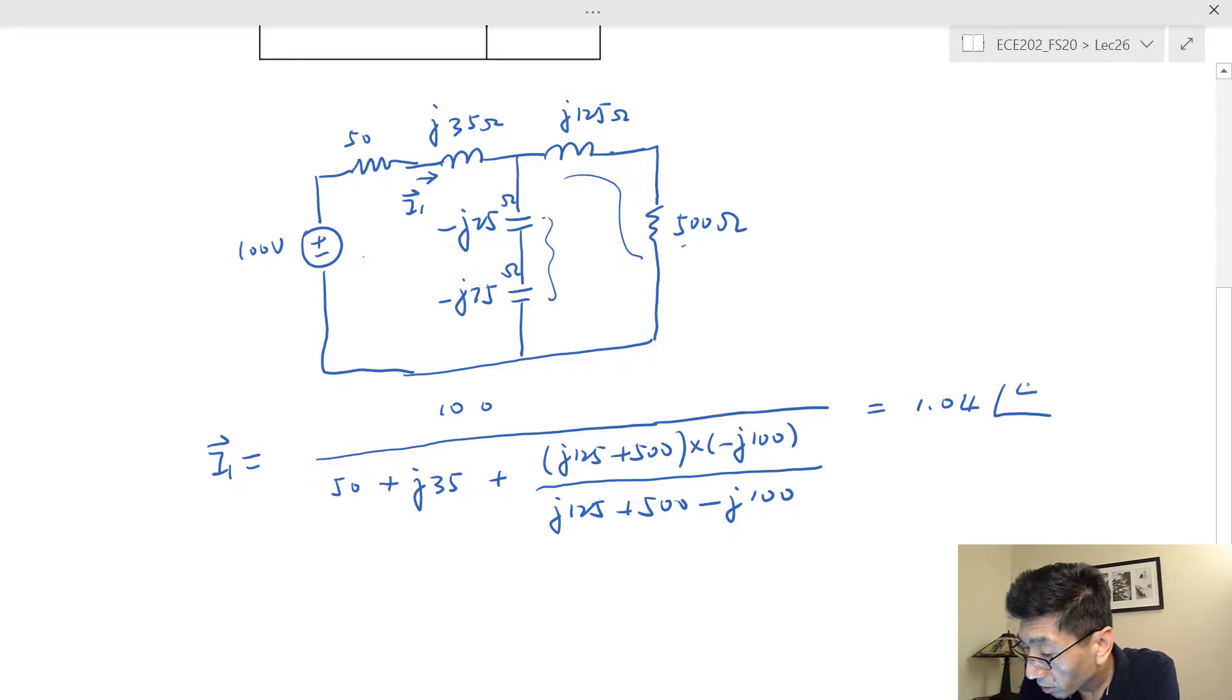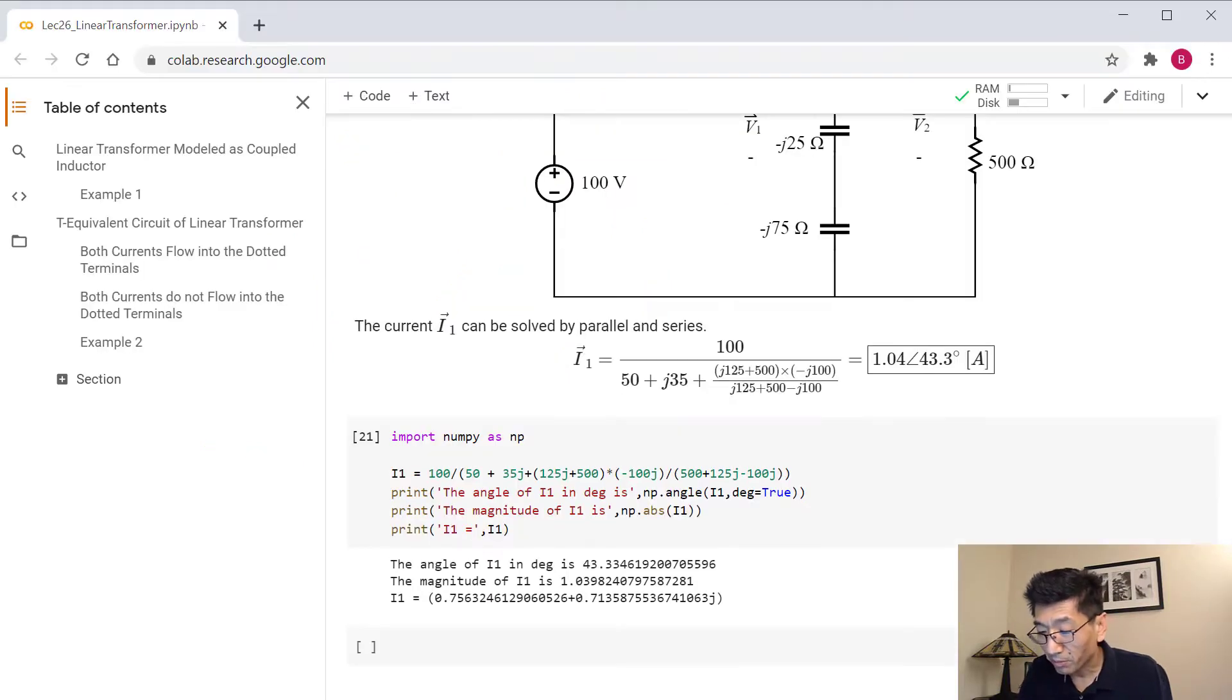If you don't believe me, I can show you the evidence using Python. That's the very intelligent calculator. It's just crunching the numbers here. I use Python to crunch the numbers for me. I just write this equation: 100 divided by (50 + 35j + ((500 + 125j) * (-100j)) / (500 + 125j - 100j)). That's how you do it in Python - 35j is a complex number. Once I run this, it's exactly the same angle, same current we get from the first one.